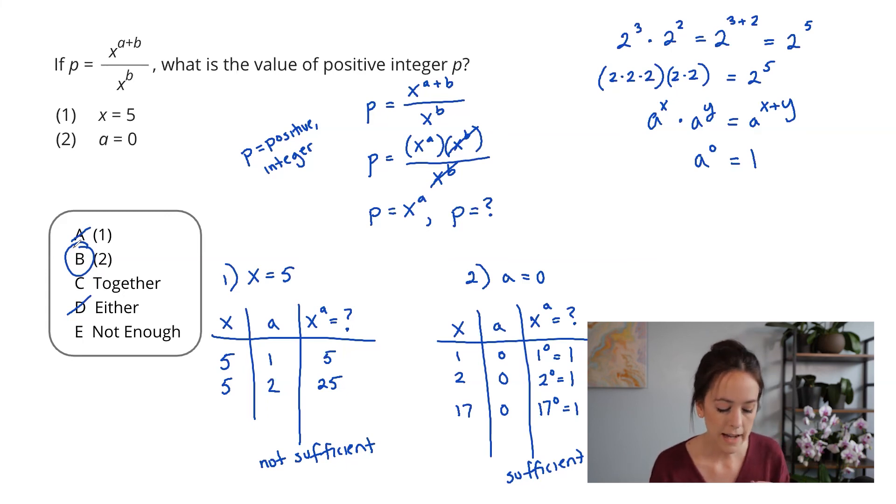Secondly, do not assume that just because it looks like something is insufficient, that it is insufficient. Actually take the time to test out a couple numbers and prove it one way or another. And then lastly, you do need to know some exponent rules when you go into the GMAT. And so make sure you learn these and the other rules that you have to know before you go into testing.